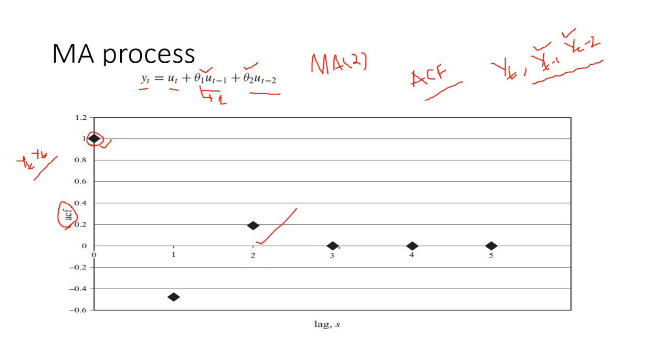So, sometimes you will not have the ACF values exactly equal to 0. So, you need to do a statistical test whether the ACF value is close enough to 0 or it is significantly different than 0. Sometimes we need to do the statistical test for that, like a t-test or something like that. So, that's how we choose the number of lags to be used in the MA process.